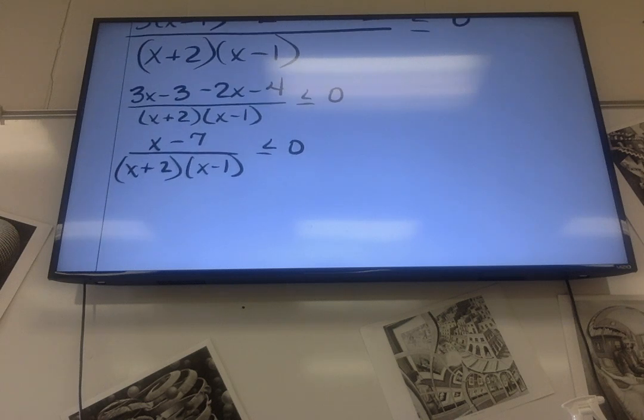So I know it actually equals zero where the top equals zero, as long as nothing cancels, which nothing does cancel on top and bottom. So it actually equals zero there. That's why I'm going to put a box around it, because this is less than or equal to zero.